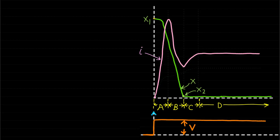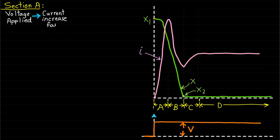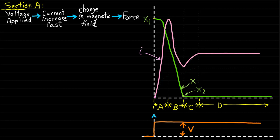Section A represents the part where the voltage is applied. As the voltage is applied, the current is going to increase very fast because the inductance is very small at the beginning. This current will cause changes in the magnetic field, which produces some force on the moving part and the moving part starts to move. As the moving part is moving, the air gap gets smaller and the inductance starts to increase.